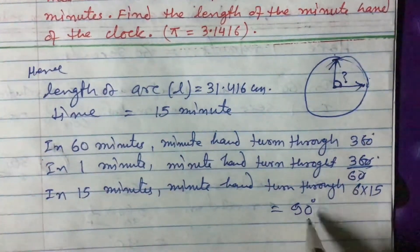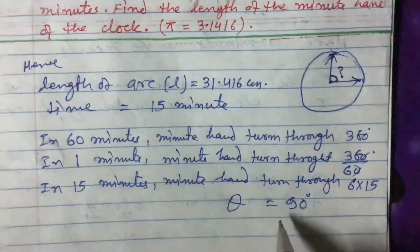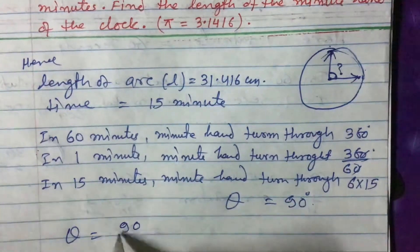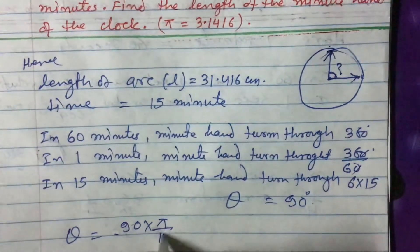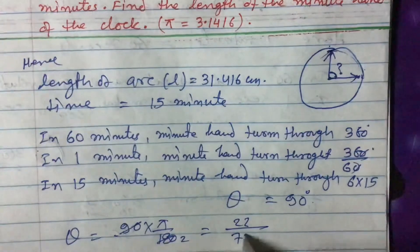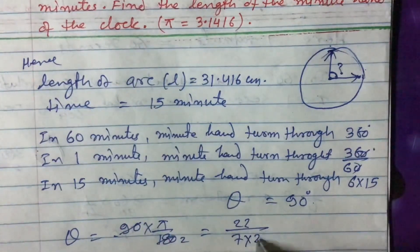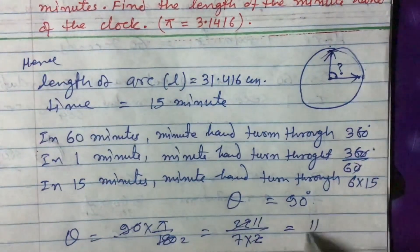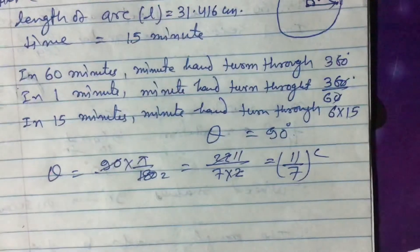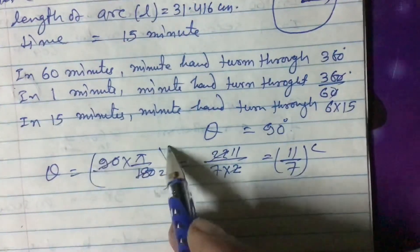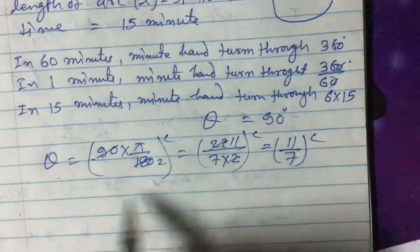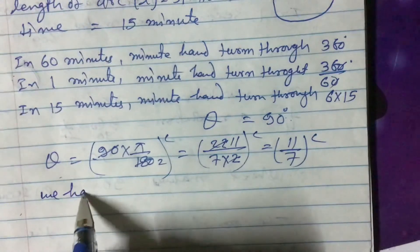We need to convert this theta from degrees into radians. So 90 degrees times pi divided by 180 degrees. Using pi equals 22/7, we get: 90 times 22 divided by (7 times 180), which simplifies to 11/7 radian. So theta equals 11/7 radians.